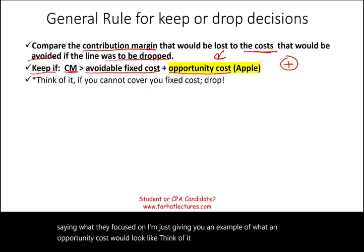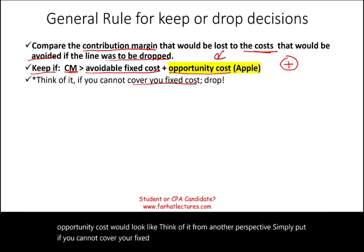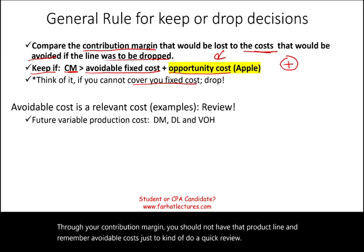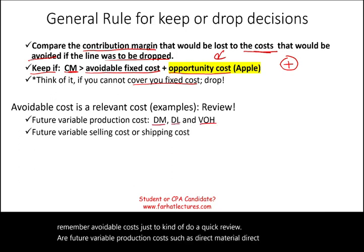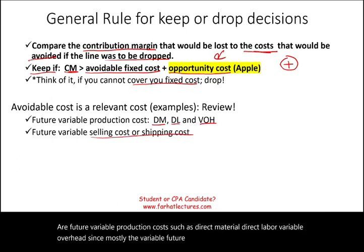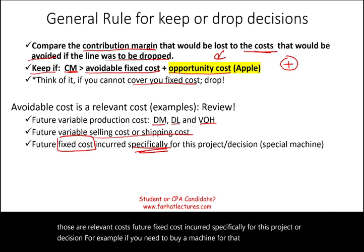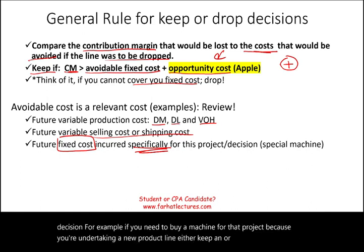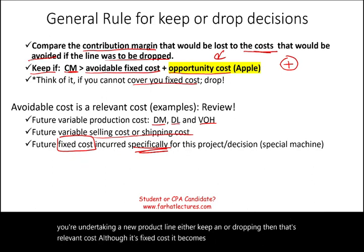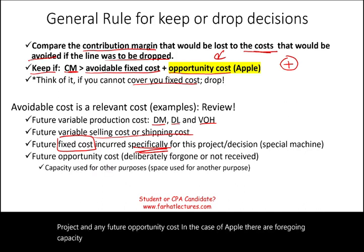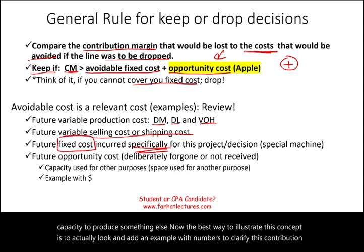If you cannot cover your fixed cost specifically through your contribution margin, you should not have that product line. Avoidable costs include future variable production costs such as direct material, direct labor, and variable overhead; future variable selling or shipping costs; and future fixed costs incurred specifically for that project — for example, buying a machine for a new product line. Although it's a fixed cost, it becomes relevant because it's specific to that project, along with any future opportunity cost.